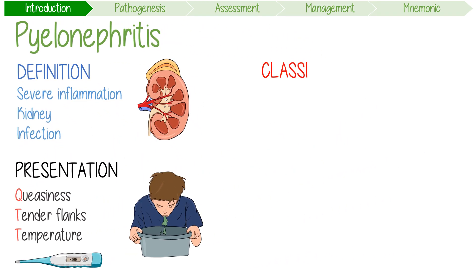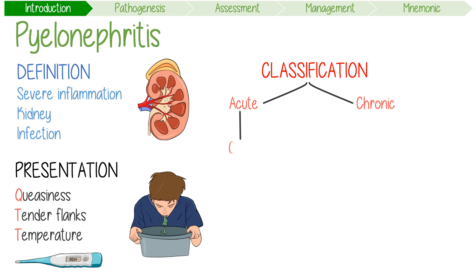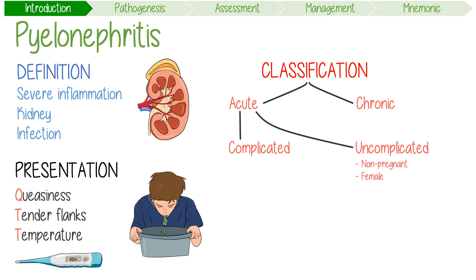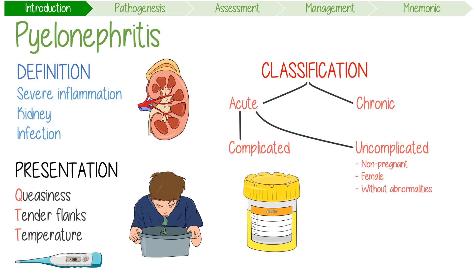You can classify pyelonephritis as acute or chronic. Acute pyelonephritis is further classified into complicated or uncomplicated infection. We use uncomplicated to refer to cases where a non-pregnant female without anatomical abnormalities develops it.